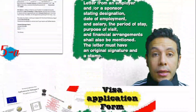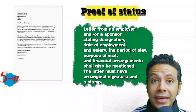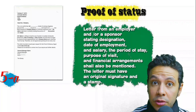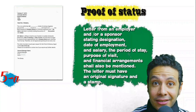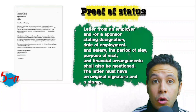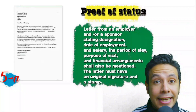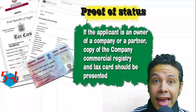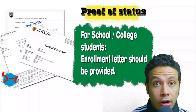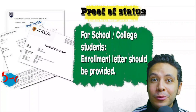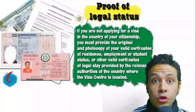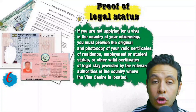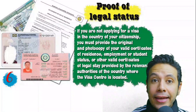In most visa application processes you will be required to provide a proof of status. If you are an employee, you will need a letter from your employer or HR department mentioning your name, work details, salary, address, and contact numbers. All letters must have an original signature and stamp. If you own a company or run your own business, your commercial registry and tax card must be presented. If you are a student, an enrollment letter should be provided from your university or school.